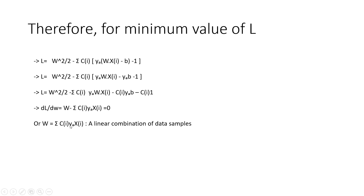This is very interesting: the width w essentially depends on a linear combination of the data samples. It's not any complex function — you're simply summing up your samples. Some samples play a higher role; for example, when x_i is a support vector, the constant c_i would be very large. For other points that are relatively less important, the value of c_i would be smaller.